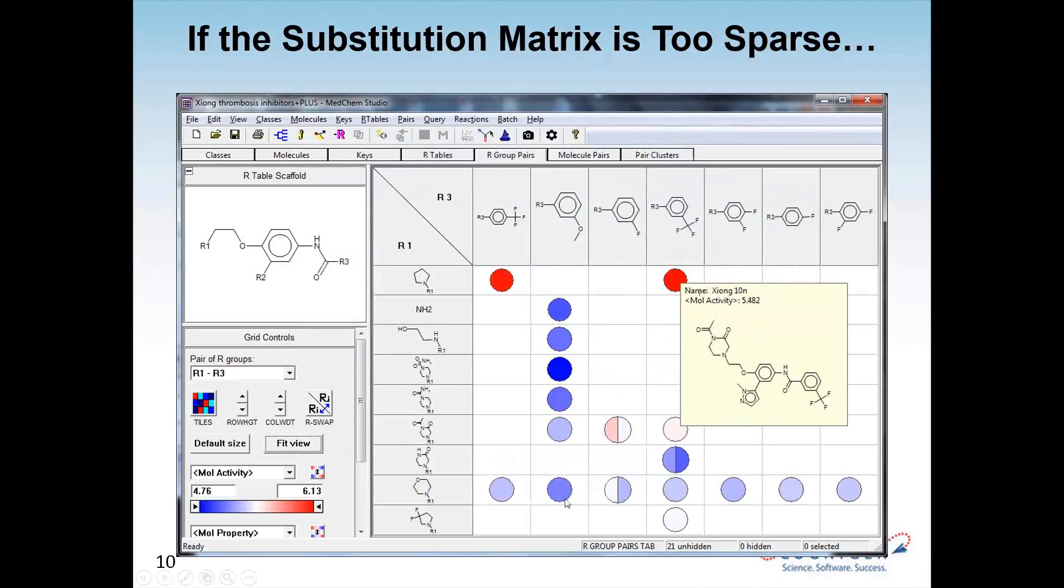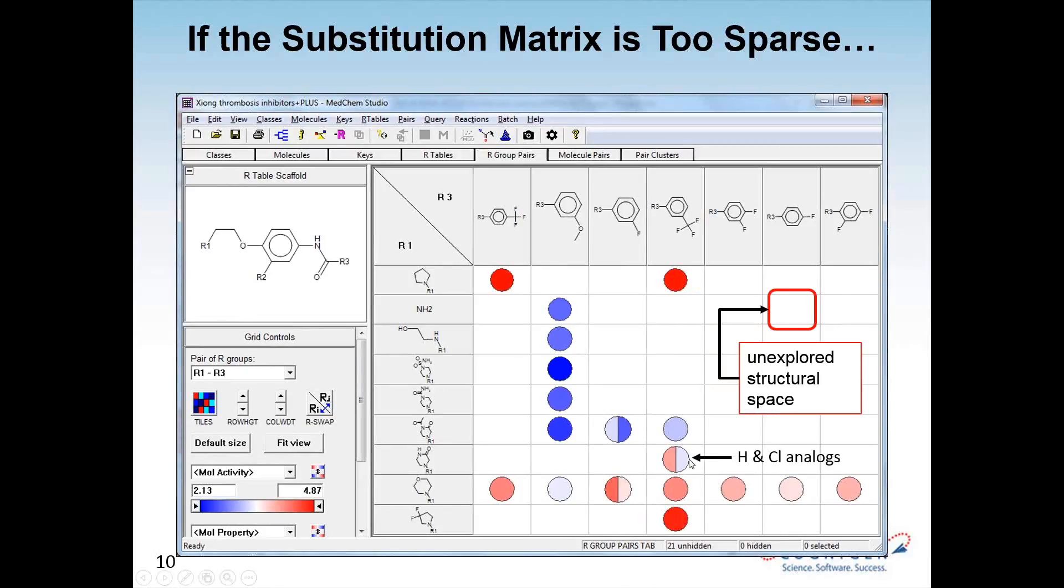This is the actual matrix for the compounds from the Xiong paper. This is showing R1 versus R3. Where the circle has multiple sectors, that means there's more than one representative with that combination of R1 and R3. In particular, there's cases where they tried out both hydrogen and chlorine at R2 off the panel group. But a lot of the structural space, a lot of the combinations aren't explored at all.